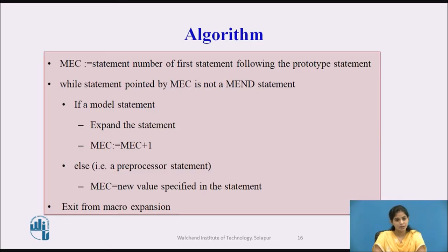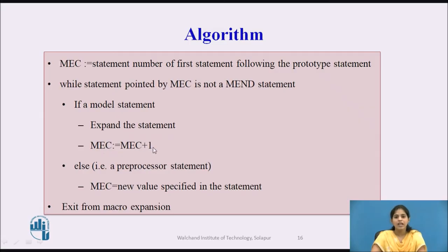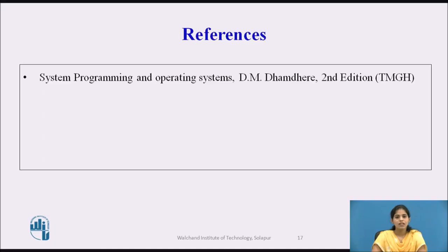The algorithm of macro expansion works as follows. First, MEC is assigned the statement number of the first statement following the prototype statement. Then a while loop executes while the statement pointed to by MEC is not a macro end statement. If there is a model statement, it is expanded and MEC is incremented by one. If it is a preprocessor statement, MEC is set to a new value to implement conditional expansion or expansion time loops. The third step is exit from macro expansion.